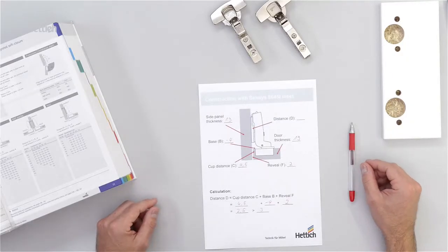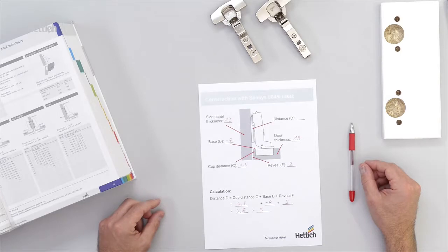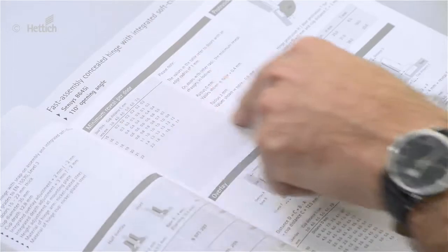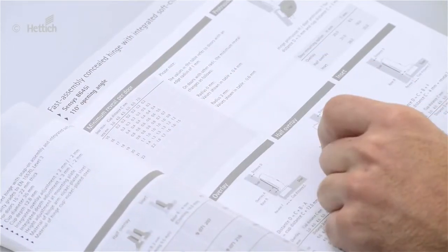In the last step we have to cross check the minimum reveal. Therefore we go back to the catalog. There is a little table that shows the minimum reveals.